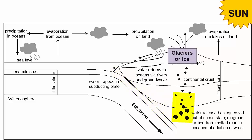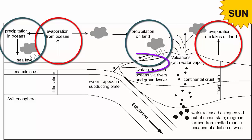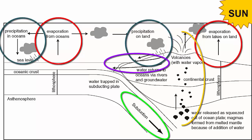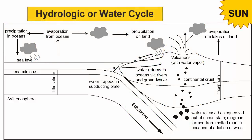When oceanic crust eventually sinks into the mantle at subduction zones, that water is squeezed out and, because it's less dense, rises upwards. The addition of water to the asthenosphere drops its melting point, so magmas form. These magmas are rich in water and rise upwards to produce volcanoes that release the water back into the atmosphere as a gas. Through continued evaporation, precipitation, running water, subduction, and volcanism, Earth's water continually cycles in and out of the various reservoirs — processes collectively known as the hydrologic or water cycle.